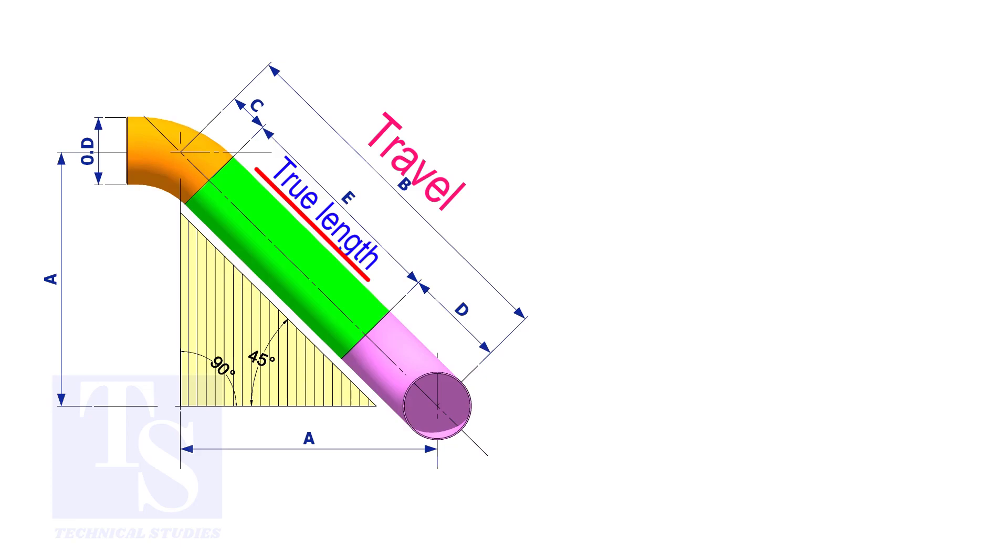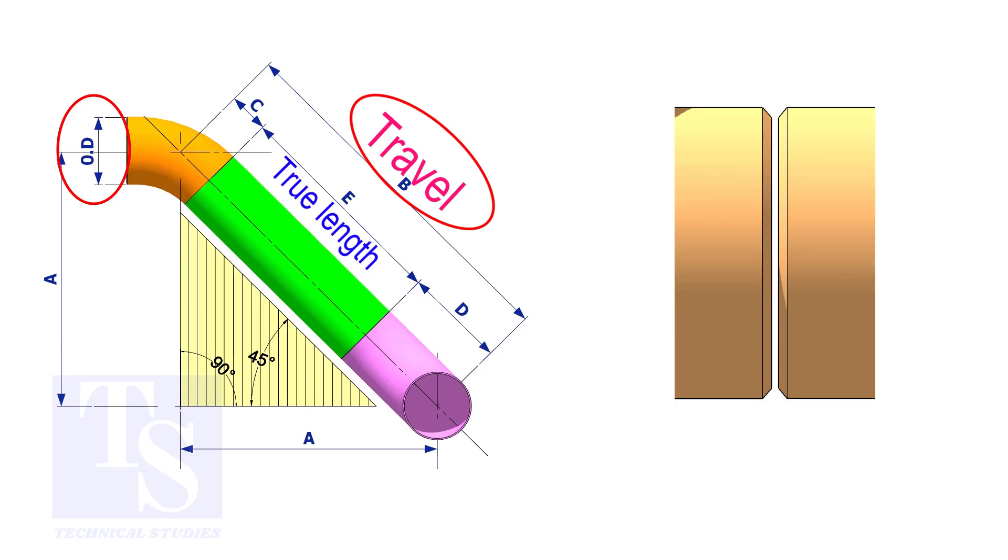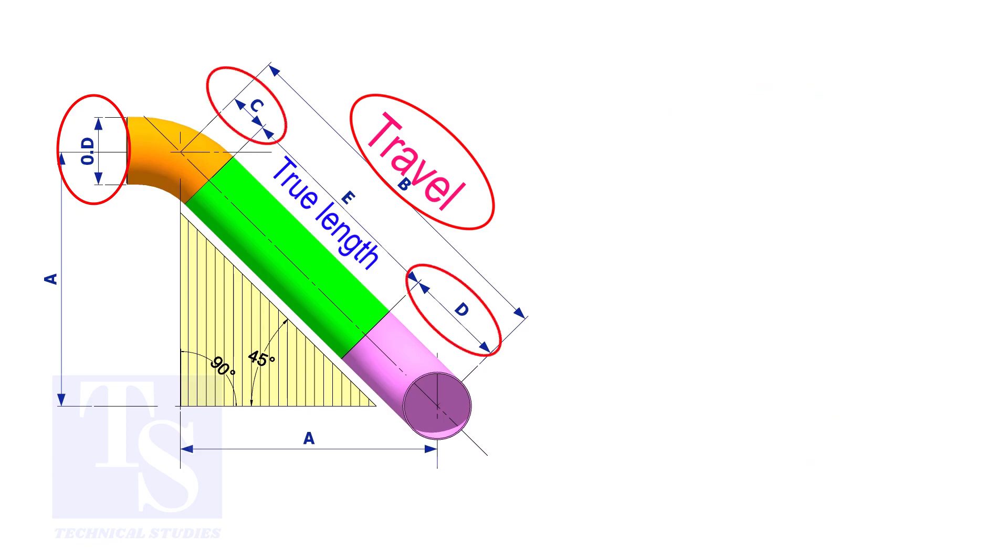To calculate the true length or the cut length, we need to know the travel length, the diameter of the pipe, the joint gap, and the elbow center. The elbow center is sometimes called takeoff length.